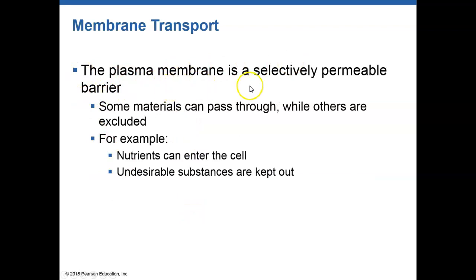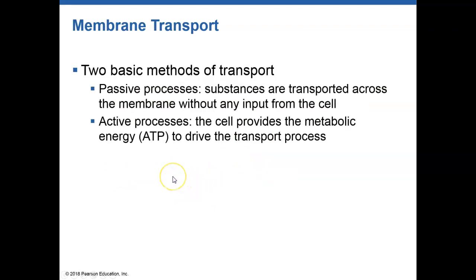The plasma membrane is a selectively permeable barrier. This barrier keeps materials from entering or exiting the cell unless we want them to enter or exit. Think of the plasma membrane like a bouncer at a bar — it determines who's going to come in, who's going to come out, who's going to hold off, and who may come in through certain doorways. There are different types of processes to allow materials into or out of the cell: passive processes and active processes.